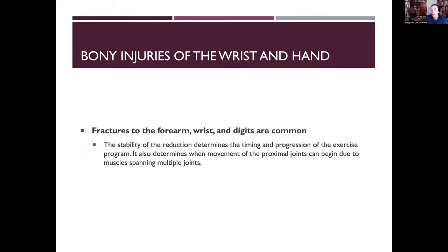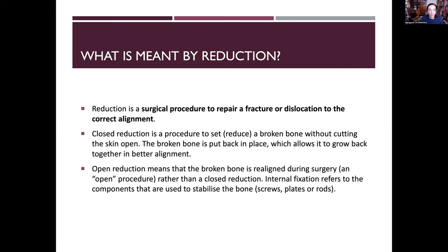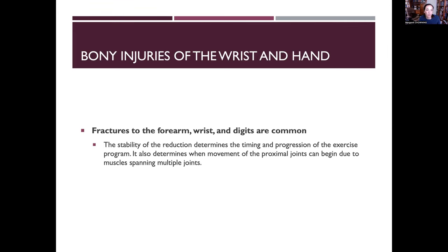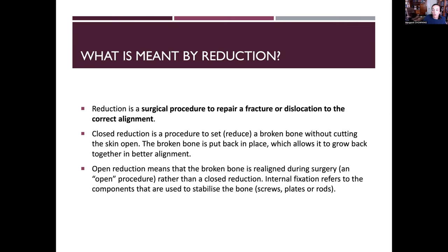Fractures to the forearm, wrist, and digits are very common because we use our hands vigorously in everyday life — typing, writing, grabbing, playing instruments. The stability of the reduction determines the timing and progression of the exercise program. A closed reduction sets a broken bone without cutting the skin open. Open reduction means the bone is realigned during surgery. Internal fixation refers to components used to stabilize the bone — so an open reduction internal fixation (ORIF) uses fixators to ensure correct healing.